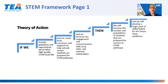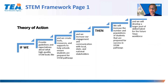Our theory of action is what drives the STEM work we are doing in Texas. The theory of action is: if we provide guidelines and expectations about what high-quality STEM looks like, and we create tools, engagement resources, and supports to help schools ensure students are prepared for STEM pathways, and we increase our engagement and communication with local, state, and national stakeholders, then we will increase the number of students prepared for STEM pathways and deliver a large pool of skilled talent to the future Texas workforce.